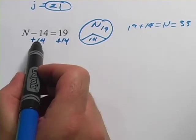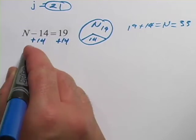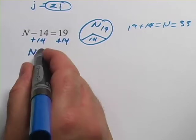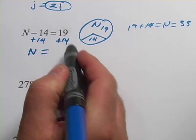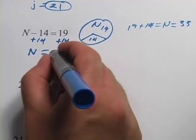Now minus 14 plus 14, zero. So all I'm left with is N on that side of the equal sign. On this side, I get 19 plus 14, which is 33.